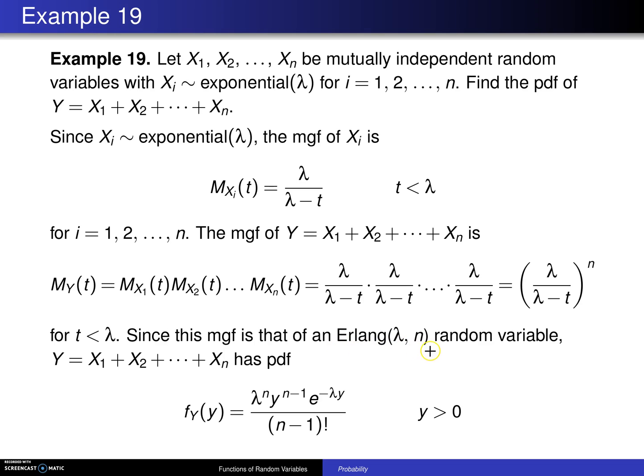It turns out that the Erlang distribution matches that, so this is an Erlang λ n random variable, which means if you just simply go to the Erlang distribution and write down its probability density function, that looks just like this. And so there is the probability density function of the sum of n iid exponential λ random variables, and it has the Erlang distribution.